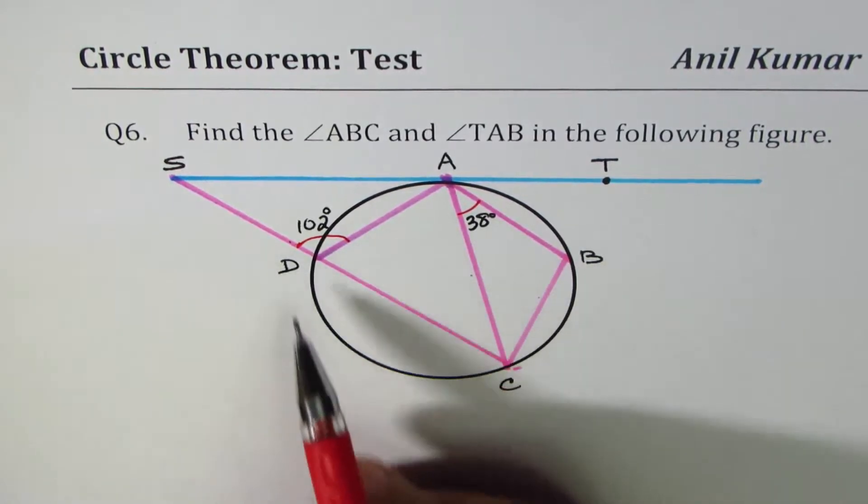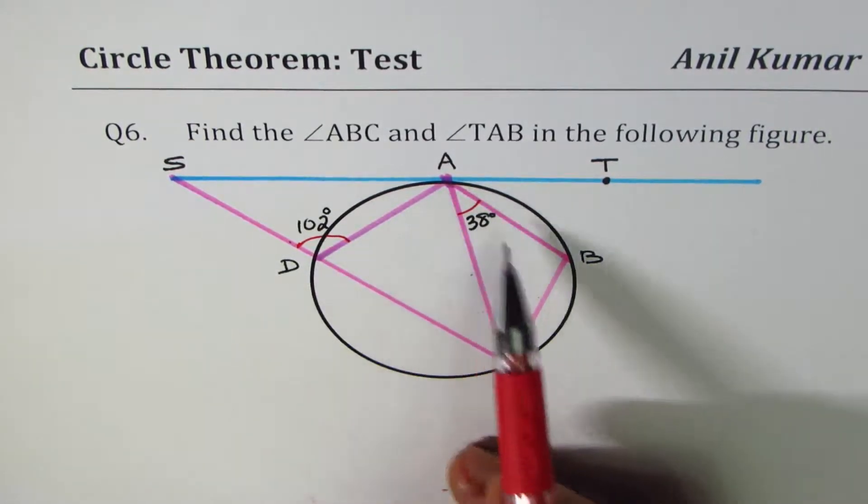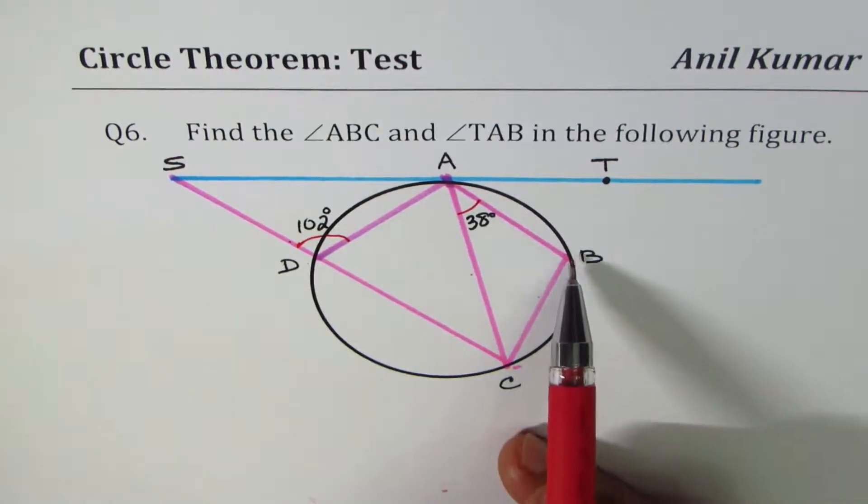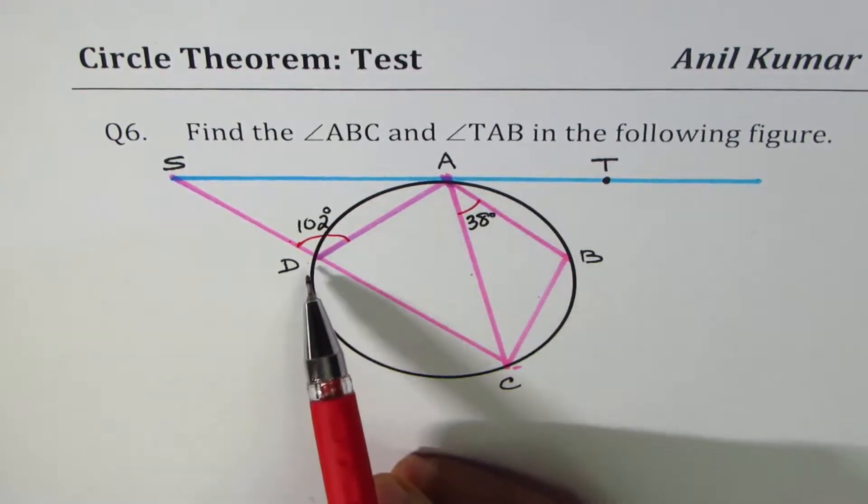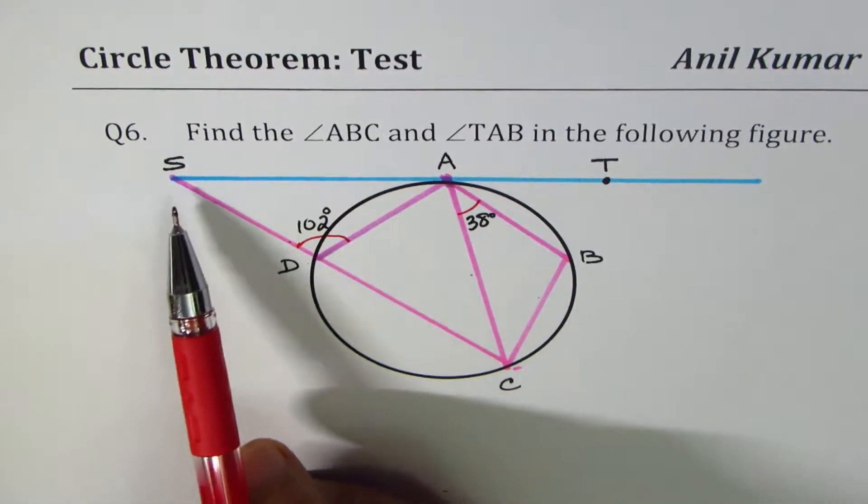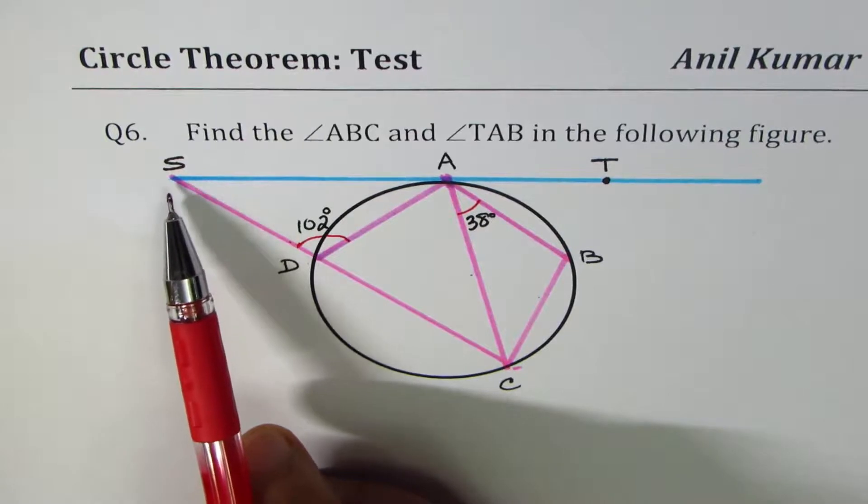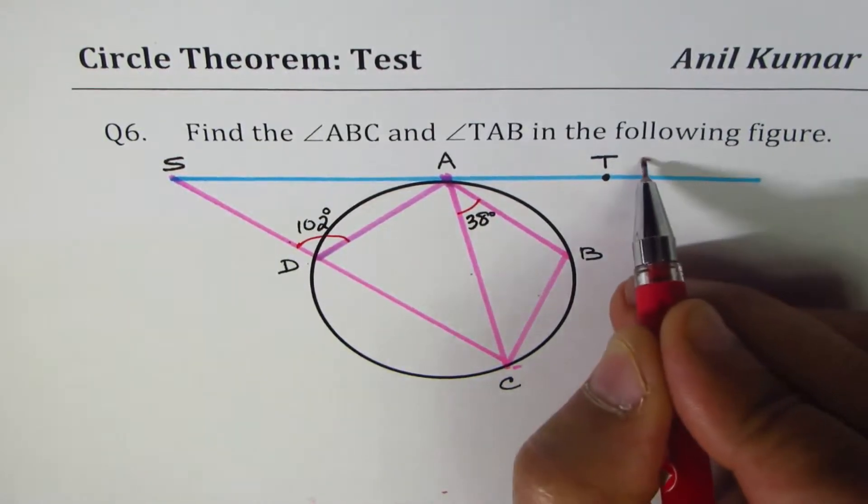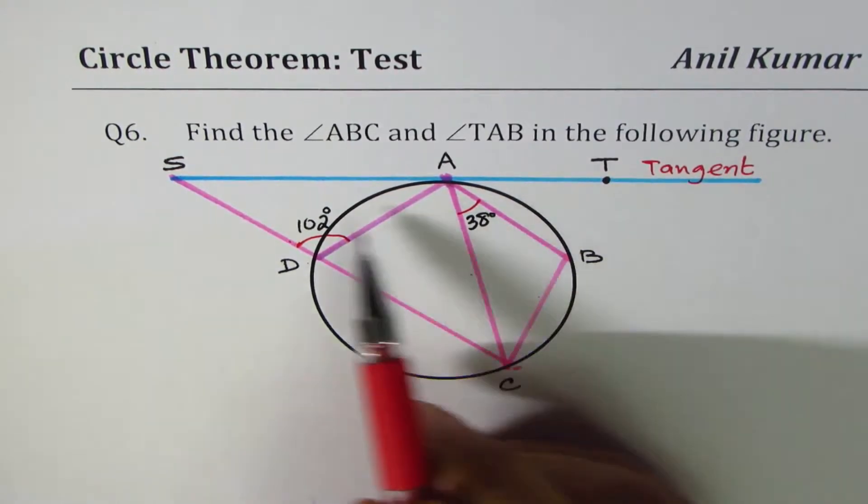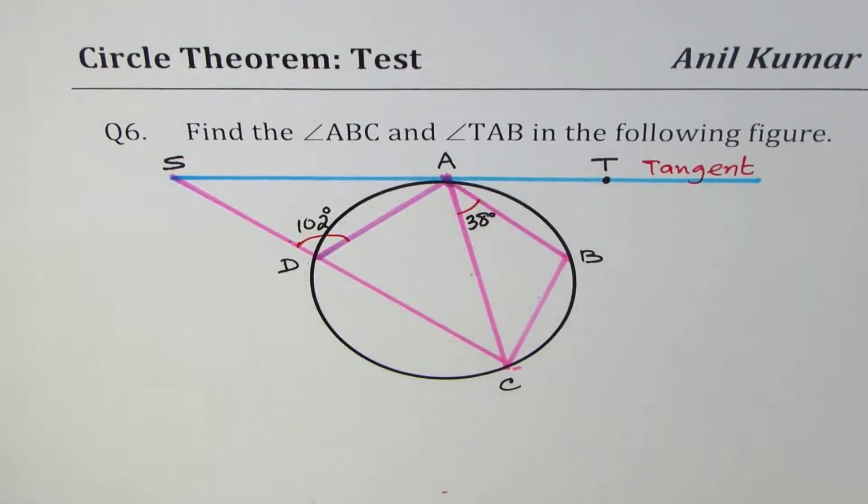So what we are given here is a circle with a cyclic quadrilateral. Four vertices of a quadrilateral are on the circumference, so it's a cyclic quadrilateral. We are given a tangent line ST, so this is the tangent. Diagram is not to scale, but wherever it seems that it is a tangent, we'll assume that to be so.